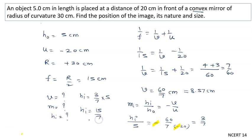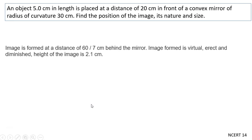15/7 means height of the image is 2.1 centimeters. So final answer: image is formed at a distance of 60/7 centimeters behind the mirror. The image formed is virtual, erect, and diminished, and the height of the image is 2.1 centimeters.